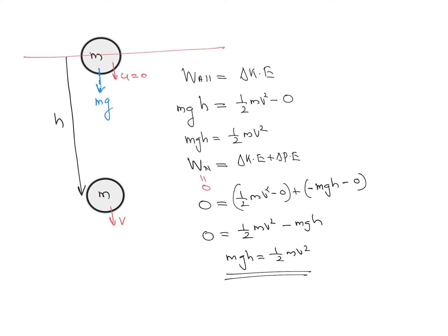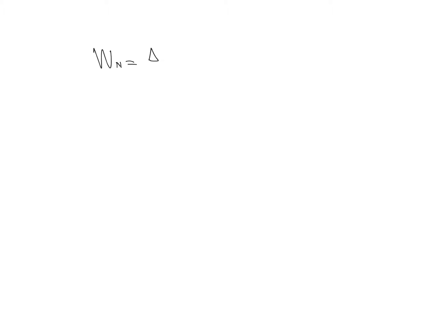Just remember: depending on the situation, use either W_all = ΔKE or W_non-conservative = ΔKE + ΔPE. Furthermore, W_non-conservative = ΔKE + ΔPE. If work done by non-conservative forces is zero — meaning frictional forces are not acting and all forces are conservative — then 0 = ΔKE + ΔPE.